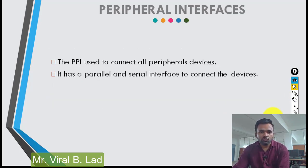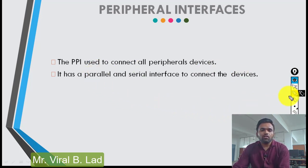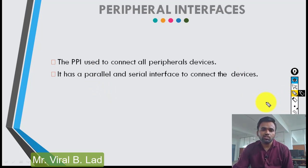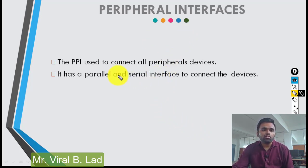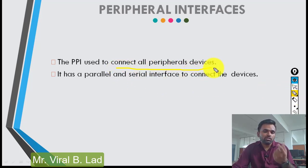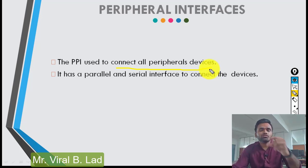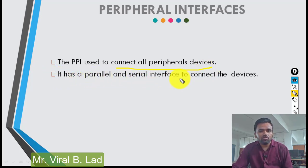Next is the peripheral interface (PPI). As seen in the last lecture, the motherboard has sockets like PS/2, USB, VGA slot, Ethernet slot — these are peripheral interfaces. They are used to connect all peripheral devices, for example a mouse connects to the USB socket. The peripheral interface has both parallel and serial interfaces.